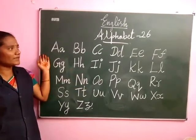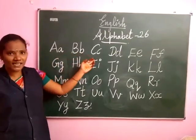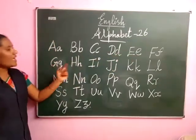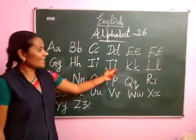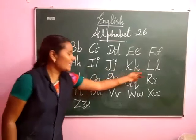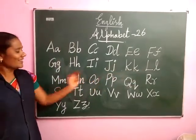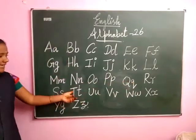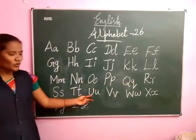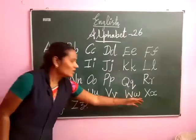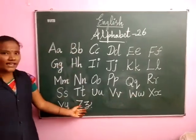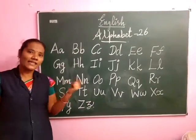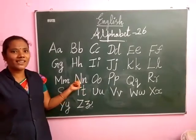What is the rhyme? A, B, C, D, E, F, G, H, I, J, K, L, M, N, O, P, Q, R, S, T, U, V, W, X, Y, Z. Now I know my A, B, C. Next time want to sing with me.